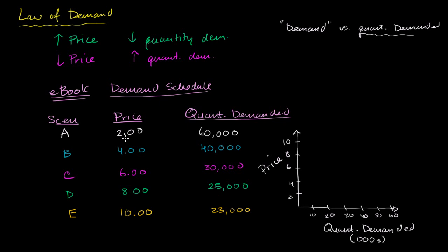So let's plot the scenarios. So scenario A, price is $2, 60,000 units are demanded. That is scenario A right over there. Scenario B, when the price is $4, 40,000 units are demanded. $4, 40,000 units, that's right over there. That's scenario B.